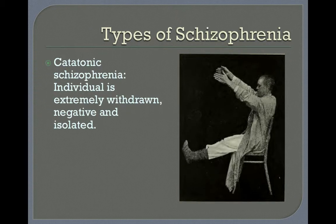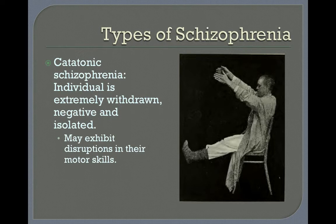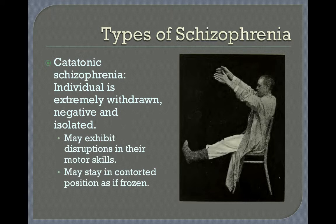Catatonic schizophrenia occurs with individuals who are extremely withdrawn, negative, and isolated. They may exhibit disruptions in their motor skills, and they may stay in contorted positions as if they are frozen — sometimes for hours on end.